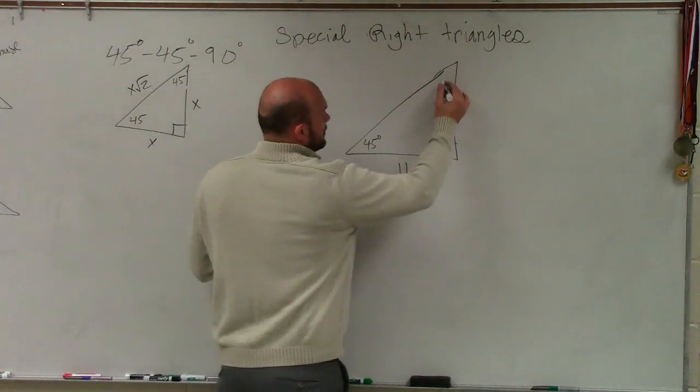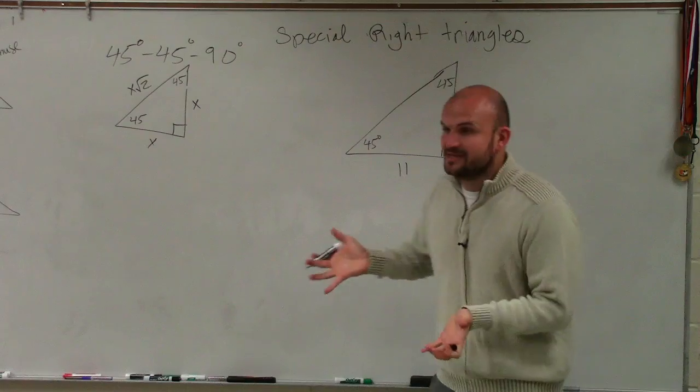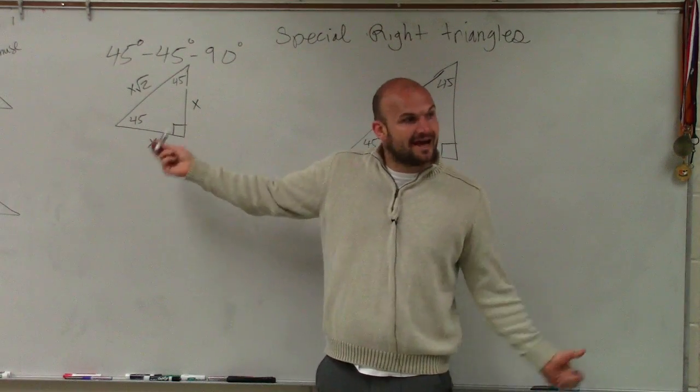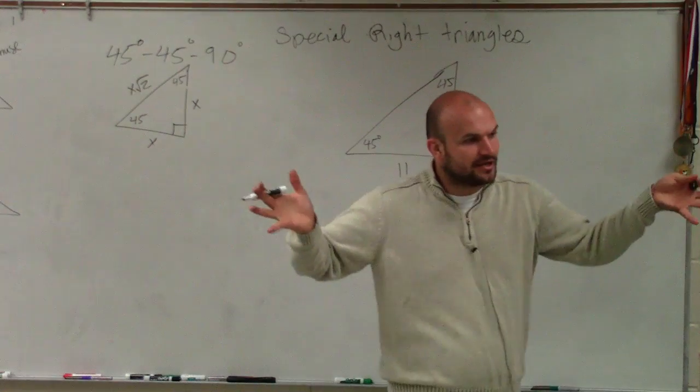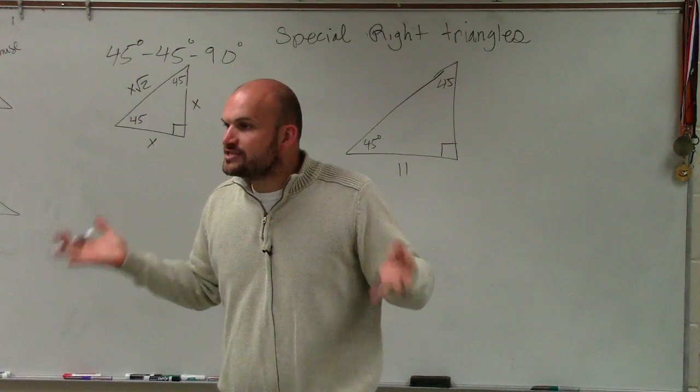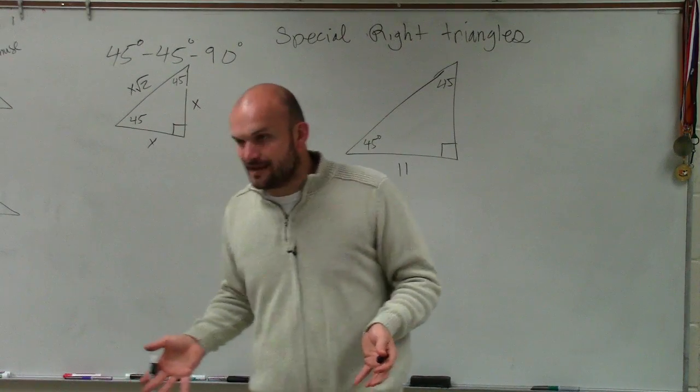If we have a 45-45 degree triangle, what we have looked at is 45 degree triangles are very special because they are part of a square. So we know that the two legs have to be equal to each other, right? Remember, we started, we created this 45-45 degree triangle from a square. And we know that the legs are going to be exactly the same.